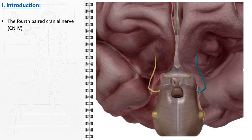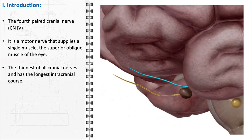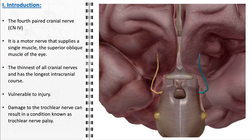The trochlear nerve, designated as the fourth paired cranial nerve, plays a crucial role in the motor functioning of the eye. It exclusively innervates the superior oblique muscle, which is responsible for certain movements of the eyeball, including its downward and outward rotation. Notably, the trochlear nerve is distinguished by several characteristics: it is the thinnest among all cranial nerves and has the longest intracranial course, which makes it particularly susceptible to damage. This vulnerability can lead to a clinical condition known as trochlear nerve palsy, which manifests when the trochlear nerve is impaired, resulting in a specific set of oculomotility disturbances.